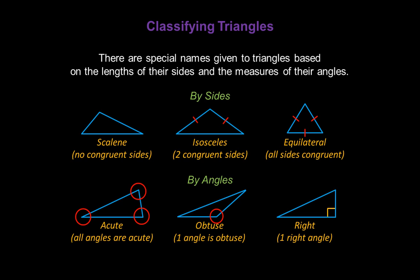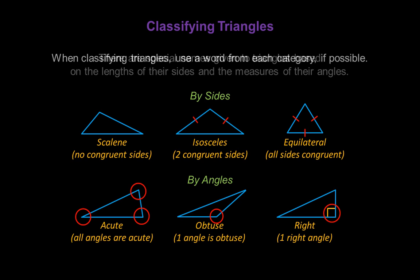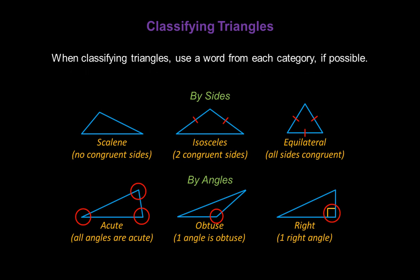This triangle is a right triangle. It has one angle that's 90 degrees. When classifying triangles, we should try to use a word from each category if possible. Always try to pick a word from the By Sides category and a word from the By Angles category to classify or name your triangle.